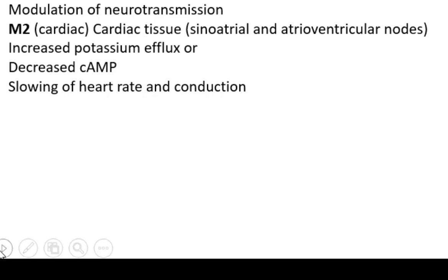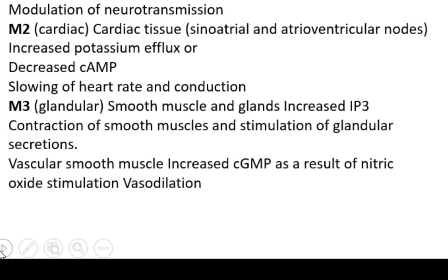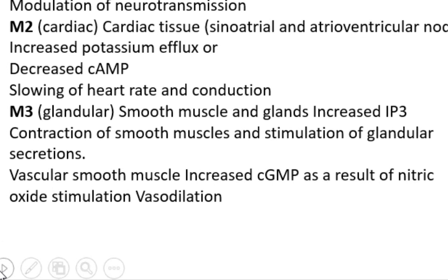M3 receptors are found in smooth muscle and glands. They are coupled with GQ proteins, and their activation stimulates phospholipase C, leading to the formation of inositol triphosphate (IP3). Increased IP3 causes contraction of smooth muscles and stimulation of glandular secretions. In vascular smooth endothelial cells, nitric oxide synthesis is stimulated, leading to vascular smooth muscle relaxation and vasodilation.